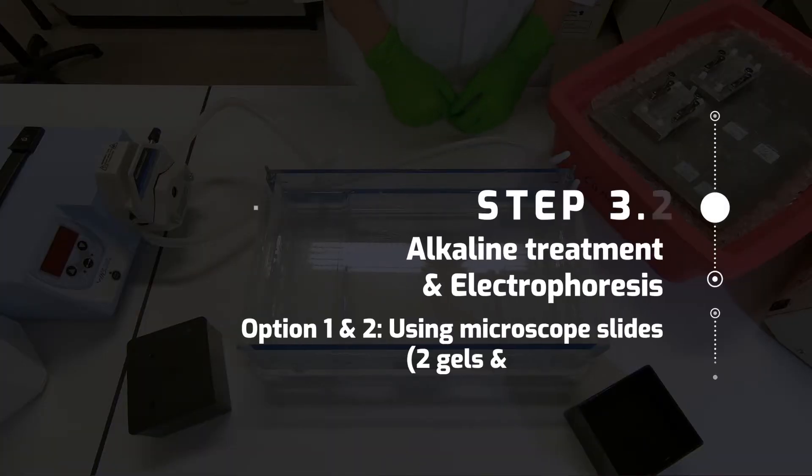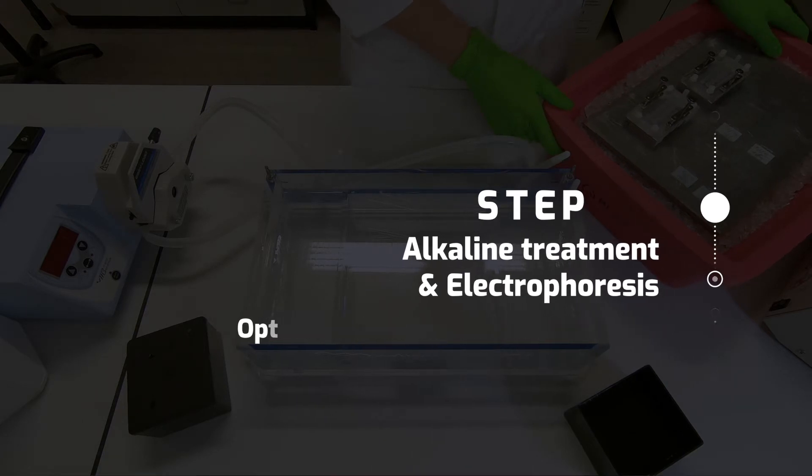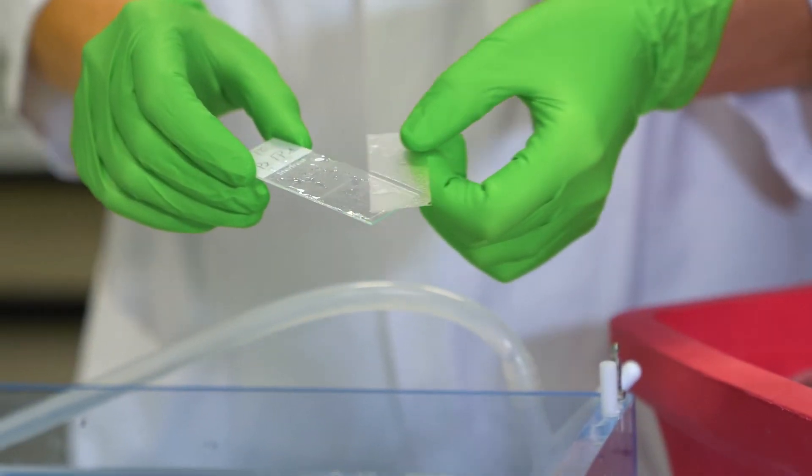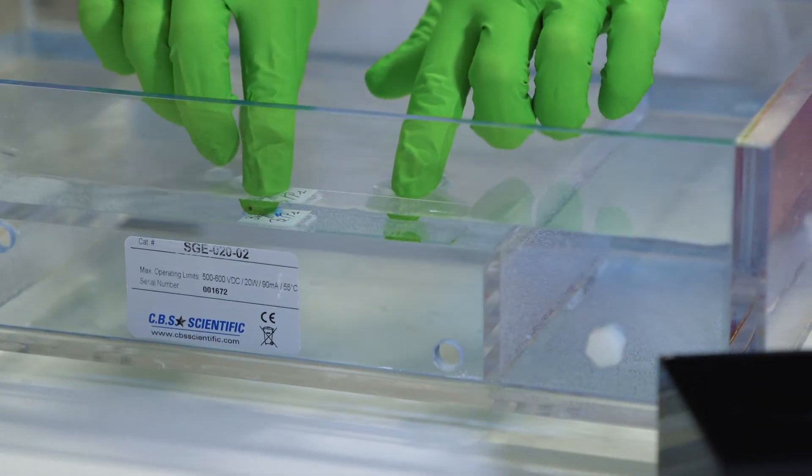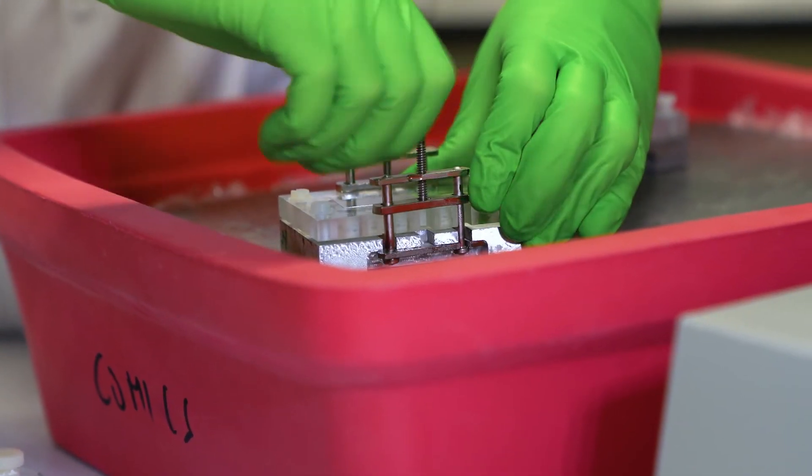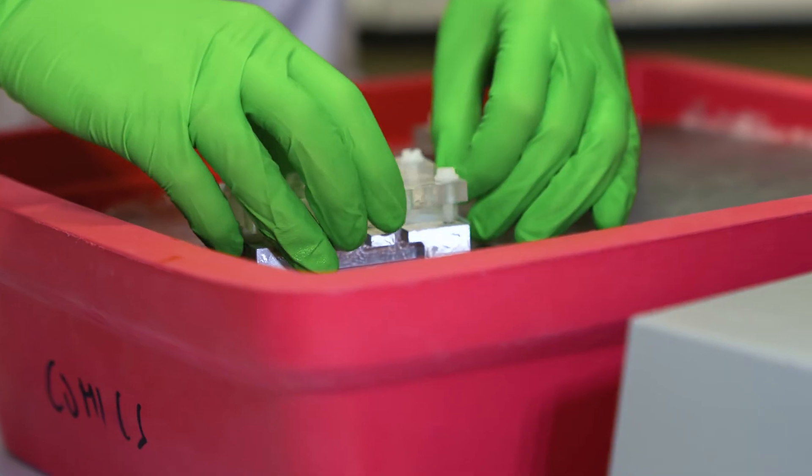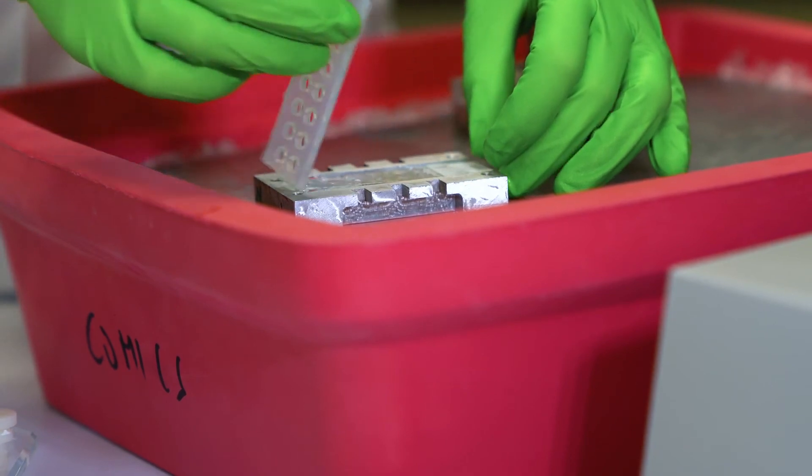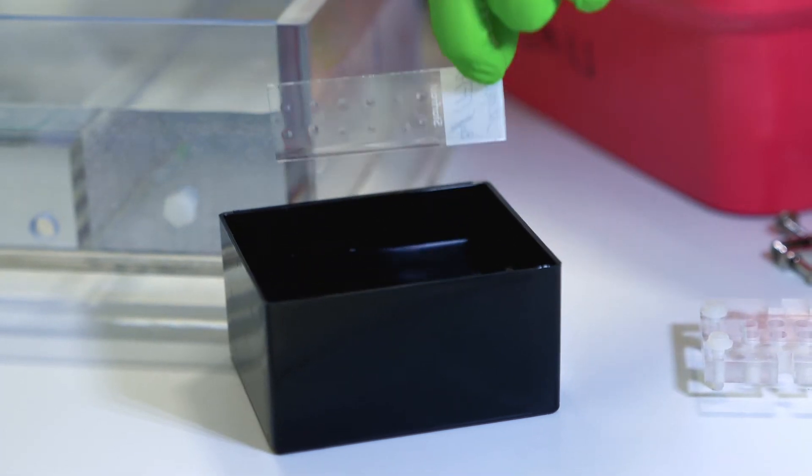After incubation, slides, all the slides, including the 12 gel units, are placed on a metal cold plate. Remove the cover slip of the slides containing 2 gels and transfer them to the electrophoresis tank. In the case of the slides containing 12 mini gels, remove them carefully from the 12th unit. And quickly, immerse them in an electrophoresis buffer before transferring them to the tank.